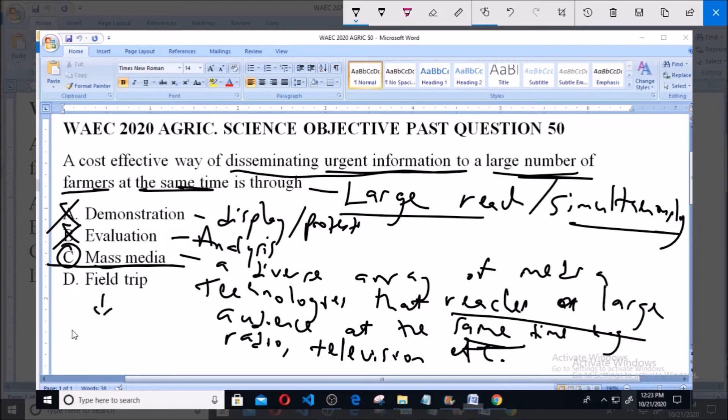The last option D says Field Trip. Field Trip just refers to a trip to a particular location, usually for educational purposes. So option D is not correct. Option C has already established the answer.